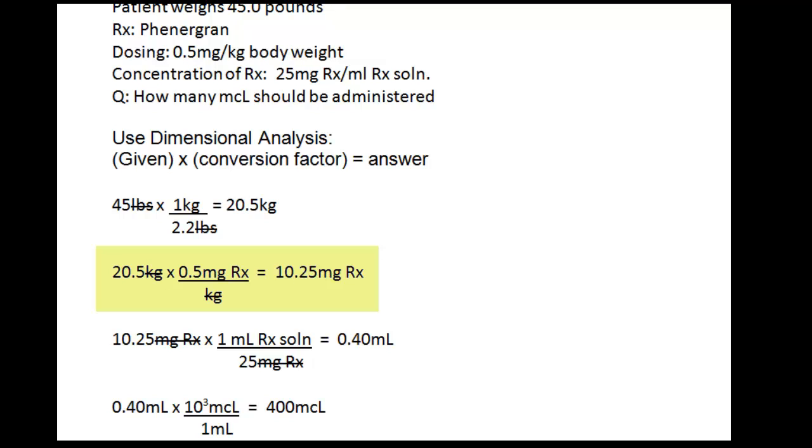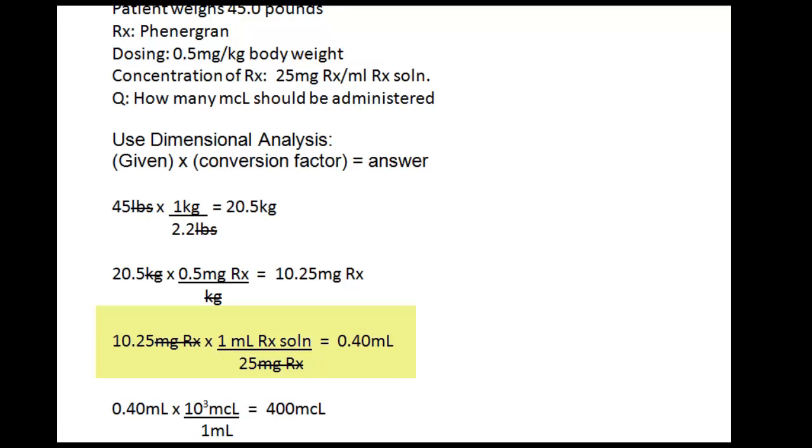Once we determine the number of milligrams of drug, we need to determine the milliliters of solution that needs to be administered. We'll look at the 25 milligrams of drug per milliliter of solution as a conversion factor also. And notice, the 25 milligrams of drug per milliliter is reciprocated, and that's so we could cancel out the units of milligrams of drug.